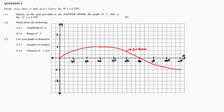The sine parent function starts at the origin, has a turning point at 90 degrees and one, intersects the x-axis at 180 degrees, and has another turning point at 270 degrees and minus one. The cosine parent function starts at the y-axis at one, intersects the x-axis at 90 degrees, has a turning point at 180 degrees and minus one, and intersects again at 270 degrees.